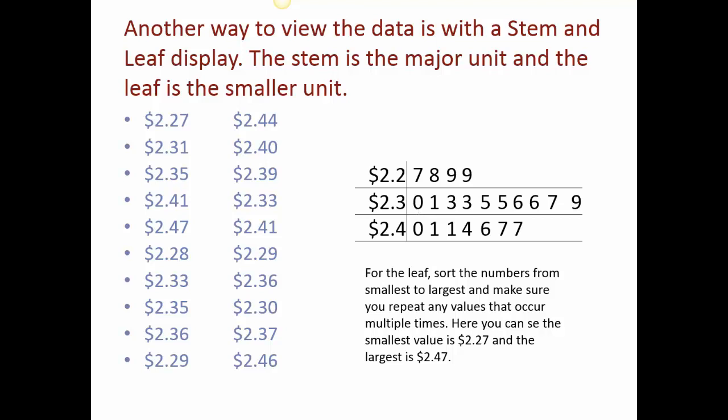What's nice about the stem and leaf display is I can tell you the smallest gas price was $2.27. I can say the largest was $2.47. I didn't lose any of the data. It doesn't tell me frequency per se the way it did the other one. I could count the frequency I wanted, but I don't have the percent, so that's okay. I can tell you the $2.30s were more common than the $2.20s and the $2.40s. So there's a lot of information here. It's just organized in a much different way.